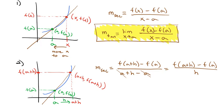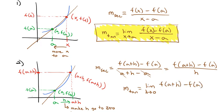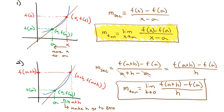The way we make this secant line into a tangent line is we say we want h — the amount we move over — to be basically zero, so we make h go to zero. The slope of the tangent line equals the limit as h goes to zero of f(a+h) minus f(a) all over h. That is the second way we can find the derivative at a point. Both formulas give the same answer; sometimes one way is easier than the other.